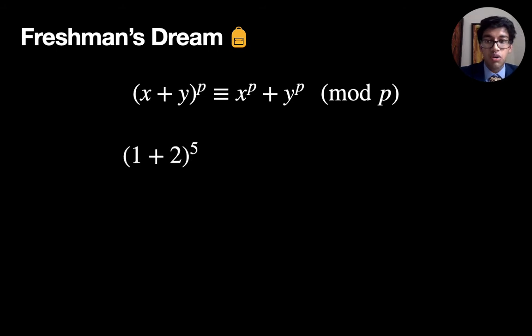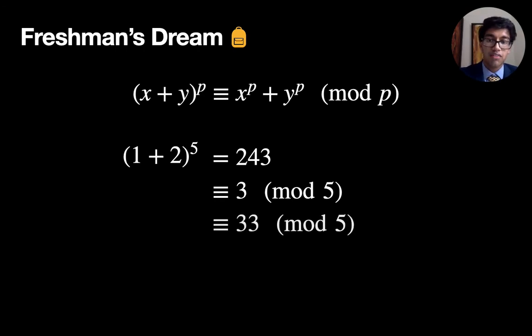So as an example, if you have one plus two all to the five, p is a prime number by the way. That's obviously three to the five, 243. And that gives a remainder of three after division by five. Now three has the same remainder as 33 after division by five. They're all in the same equivalent group essentially. And 33 is one to five plus two to five. So that holds in that case.